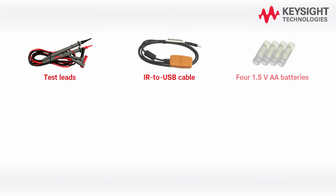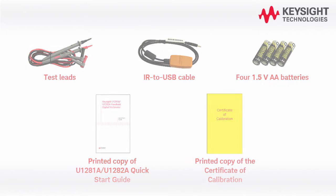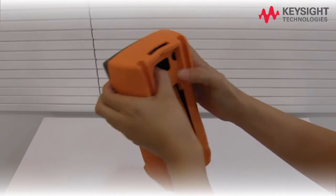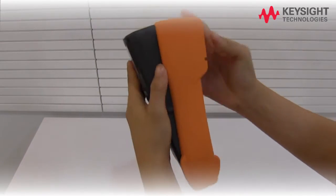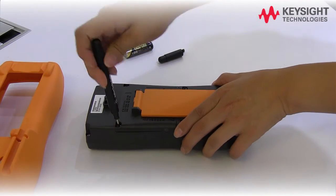When you purchase the multimeter, you will receive the following items. The U1281A/U1282A is powered by four 1.5 volt AA batteries. Let's start by installing the batteries to the meter.